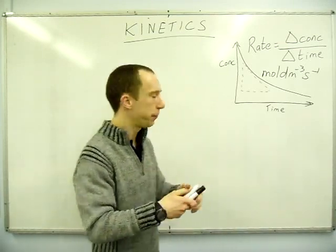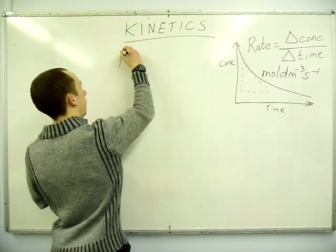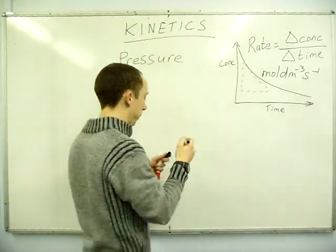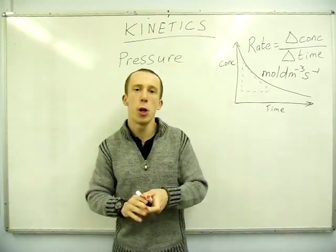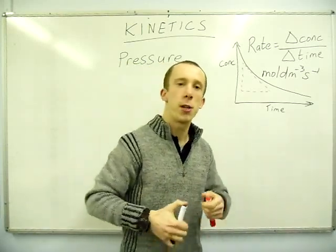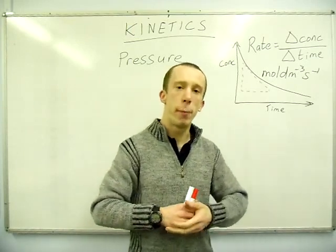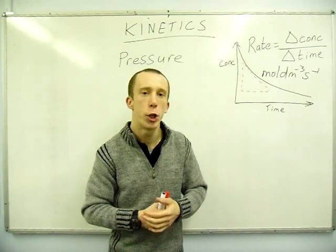First one: pressure. So imagine you've got five people in red jumpers, five people in blue jumpers walking around in a room. Every time the red and blue jumper bumps into each other, they have a hug and they form a new product.